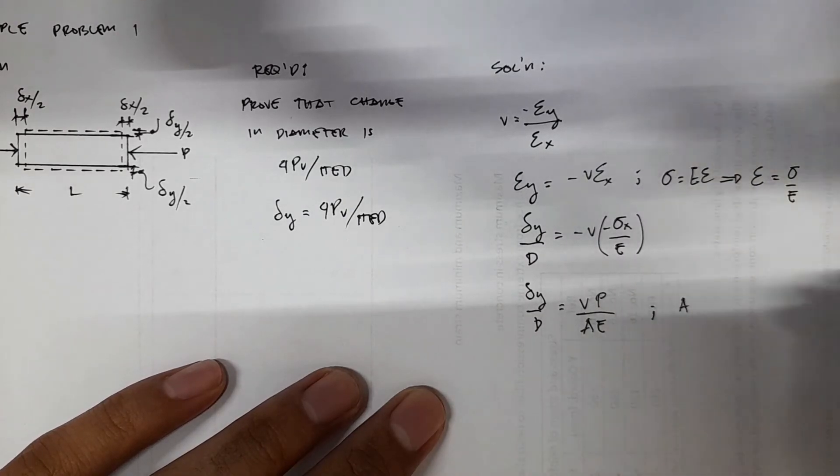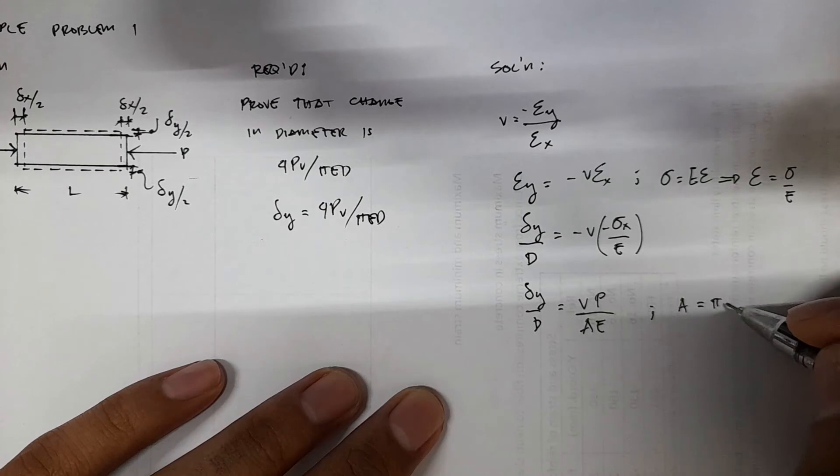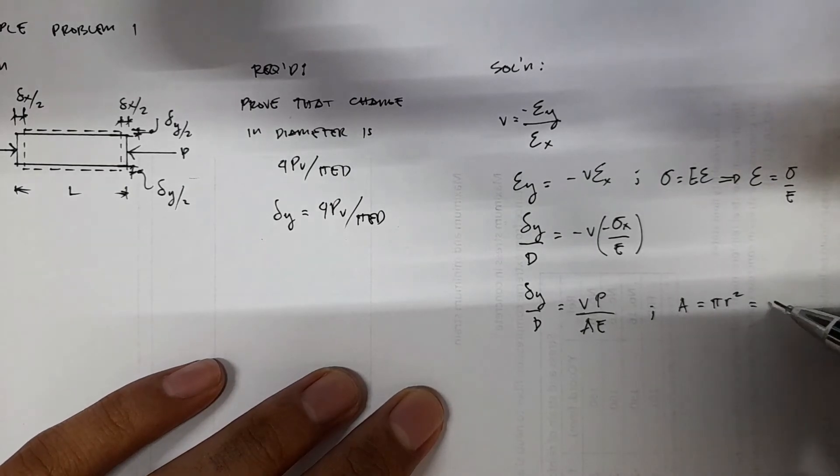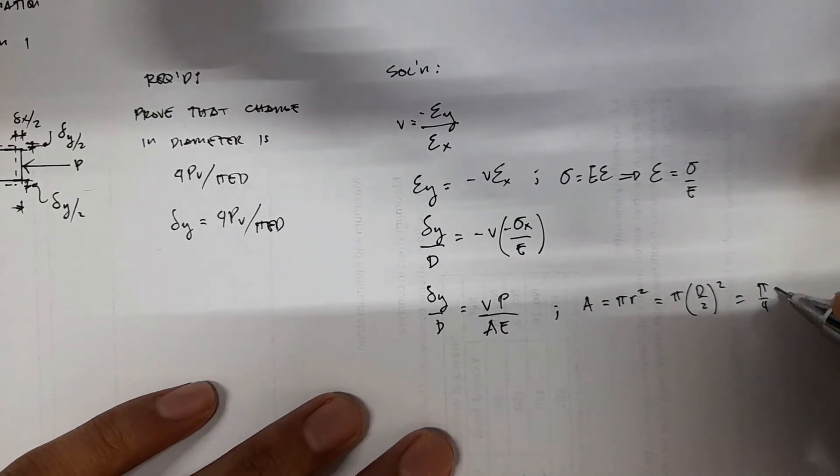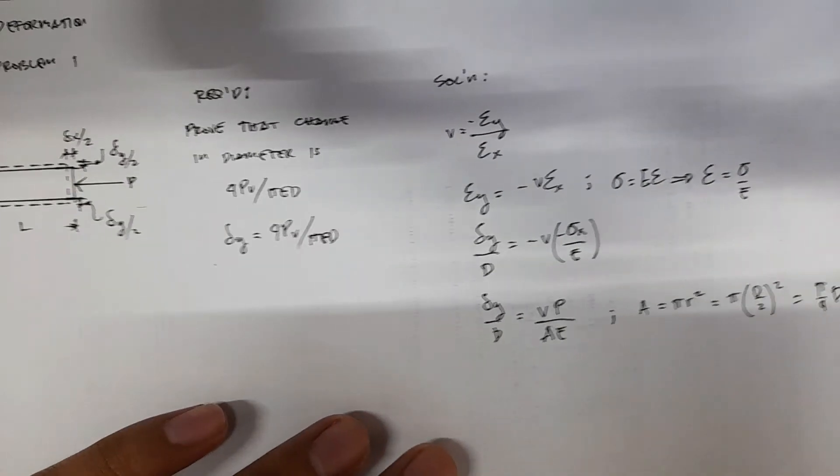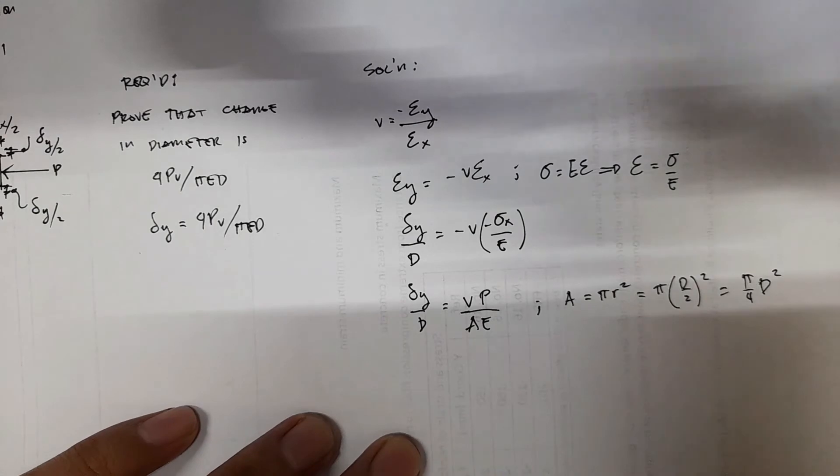So area here is just the cross-sectional area of your rod, which is equal to πr², or you can also have π(d/2)², or π/4, π/4 d². Okay, so you just have to substitute that value, or this term, for the area.